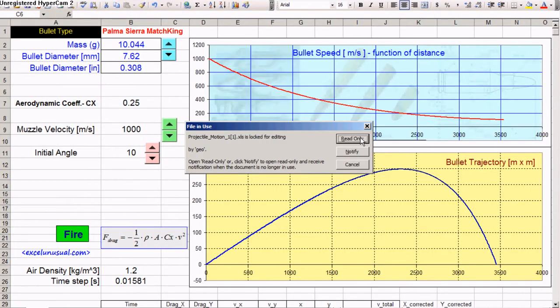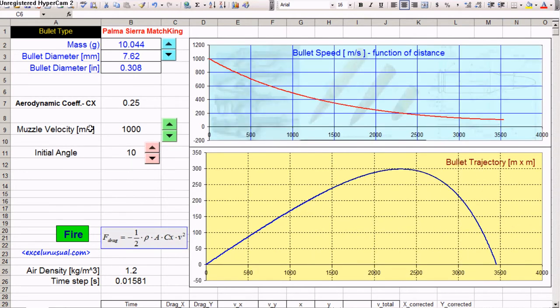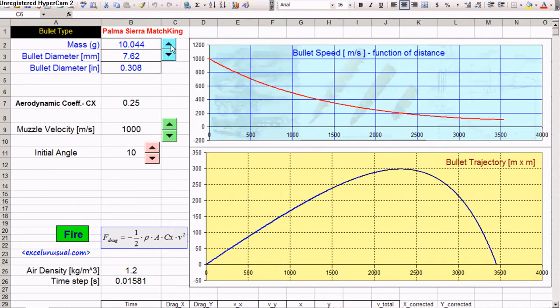It will open the file. It was already open, so it opens twice. Then here, we can change any value and hit fire to get a new trajectory.